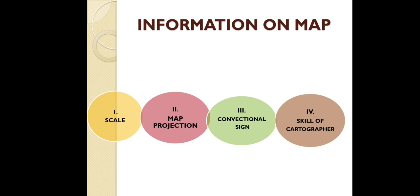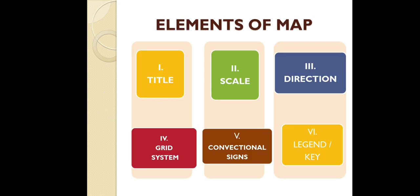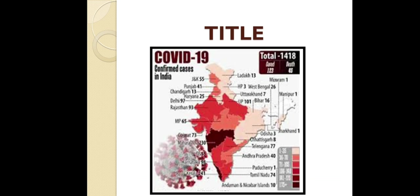The amount of information to be represented on the map depends on four aspects: first is the scale, map projection, conventional signs, and the skill of the cartographer. There are six basic elements of a map. First is the title — the title is the subject or heading of the map which makes the clarity of the map.